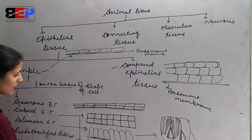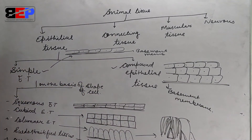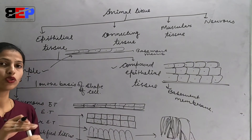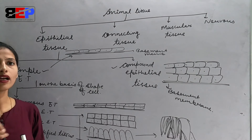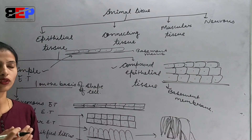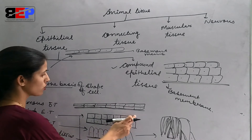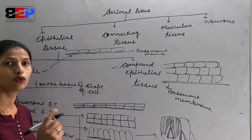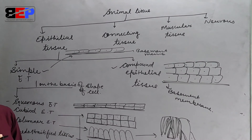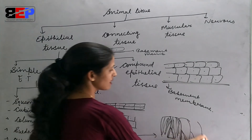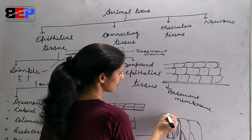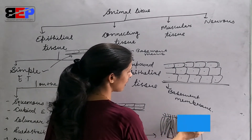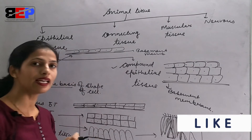The last type is ciliated epithelial tissue. Ciliated epithelium has fine hair-like structures present on the cells, which is what defines ciliated epithelium.